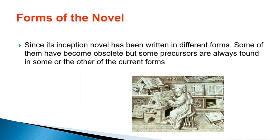Now the novel form has various forms — the genre of novel has various forms. Since its beginning the novel was written in different forms. Some of those forms became obsolete, that is outdated, but their precursors are still to be found in some of the current forms of novel writing. As I have told you earlier, students, we will discuss these forms of the novel in our next lecture.